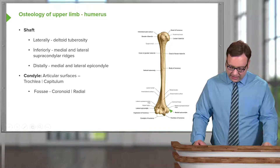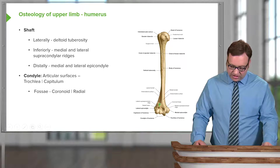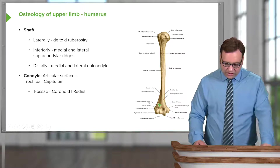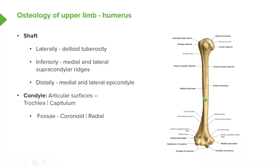We can see the medial and lateral supracondylar ridges here. These ridges form the dilation that eventually leads on to the lateral and medial epicondyles. On the lateral aspect, we have a groove known as the deltoid tuberosity, and that is the attachment site for the deltoid muscle.